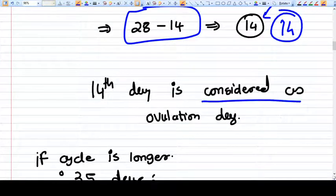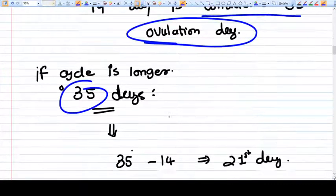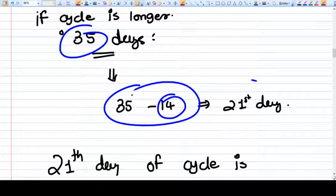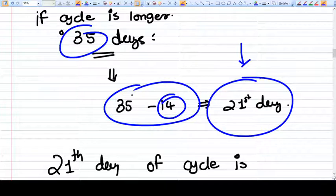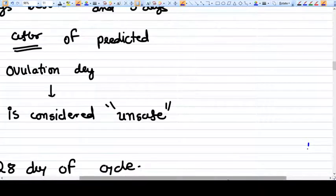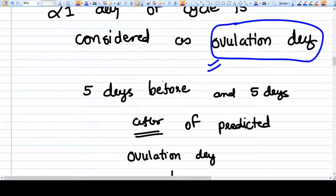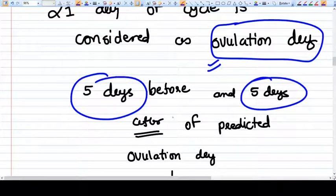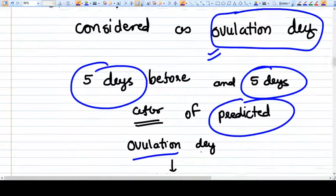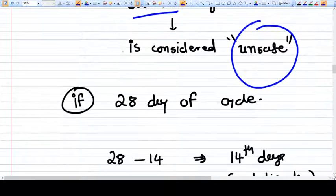The 21st day of the cycle is considered as ovulation day. So the 21st day is considered as ovulation day. Now five days before and five days after the predicted ovulation day is considered as unsafe for contraception.